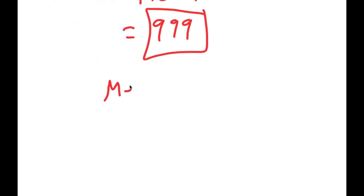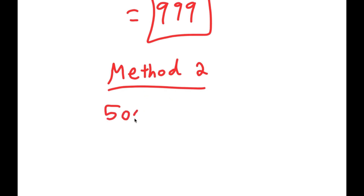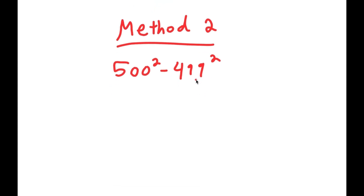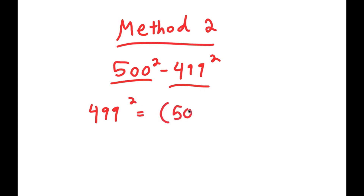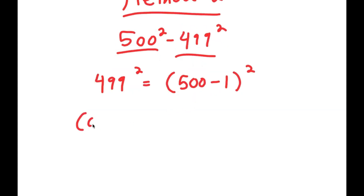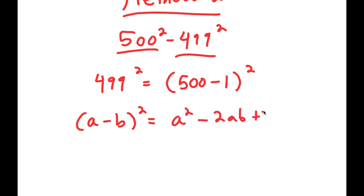Now for Method 2, I'm going to rewrite the problem 500 squared minus 499 squared. This time, instead of rewriting 500 squared, I'm going to rewrite 499 squared — so 499 squared is the same thing as (500 minus 1) squared. If I have something in the form (a minus b) squared, this is equal to a squared minus 2ab plus b squared.